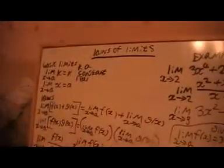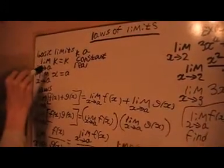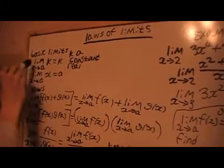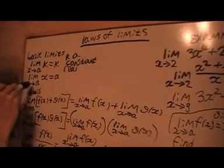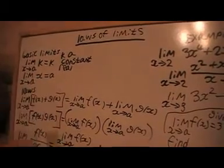In this video we're going to continue looking at limits and we're going to look at the laws of limits. Here I've got two basic limits. The limit as x approaches a, if k is equal to k, because there's no x in it. In this one, if x approaches a, then x is eventually a, so that's equal to a.